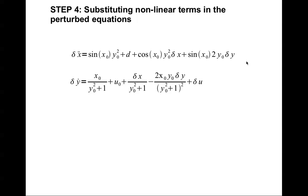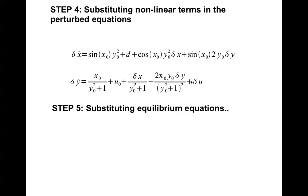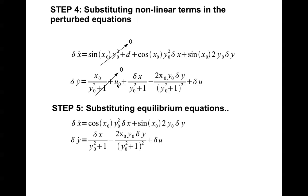Next we substitute the nonlinear terms in the perturbed equations with the linearized terms. The same is done for delta-y dot. The final step is to substitute the equilibrium equations. From the equilibrium equations we know that sine(x-naught) times y-naught squared plus d equals zero, and x-naught divided by (y-naught squared plus 1) plus u-naught equals zero, so these two terms cancel out.